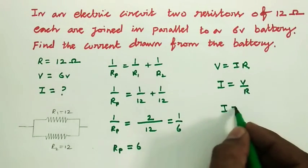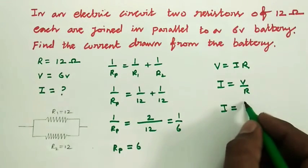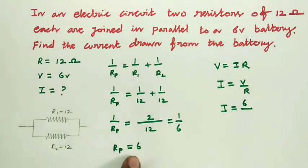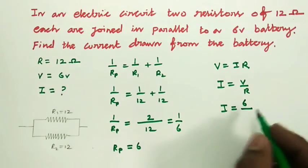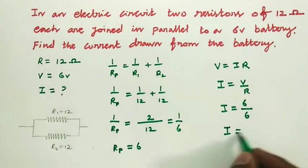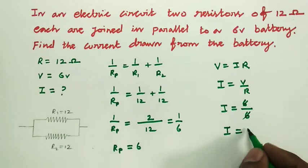So I is equal to the value of the potential voltage is 6 volt, 6, resistor 6. So I is equal to 6 by 6, cancel, equals 1.